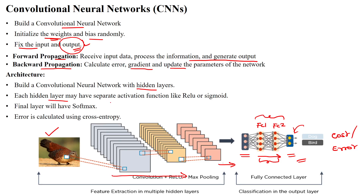The convolutional neural network has many hidden layers, each extracting information based on the given input images. Activation functions used inside CNNs are either ReLU or sigmoid — mostly ReLU is used in hidden layers. For binary class classification, sigmoid activation is used at the output; for multi-class classification, softmax is used. The cost function applied is cross entropy — categorical cross entropy for multi-class classification and binary cross entropy for binary class classification as the loss function.